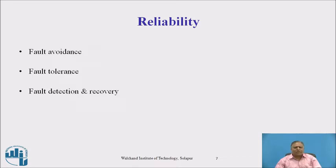Fault tolerance is the ability of the system to continue functioning even with partial failures. Even if there is a partial failure, the execution of a process can continue successfully on a node. For this, redundancy techniques and distributed control are used. Fault detection and recovery mechanisms determine the occurrence of a failure and correct the system to an acceptable state for continued operation.